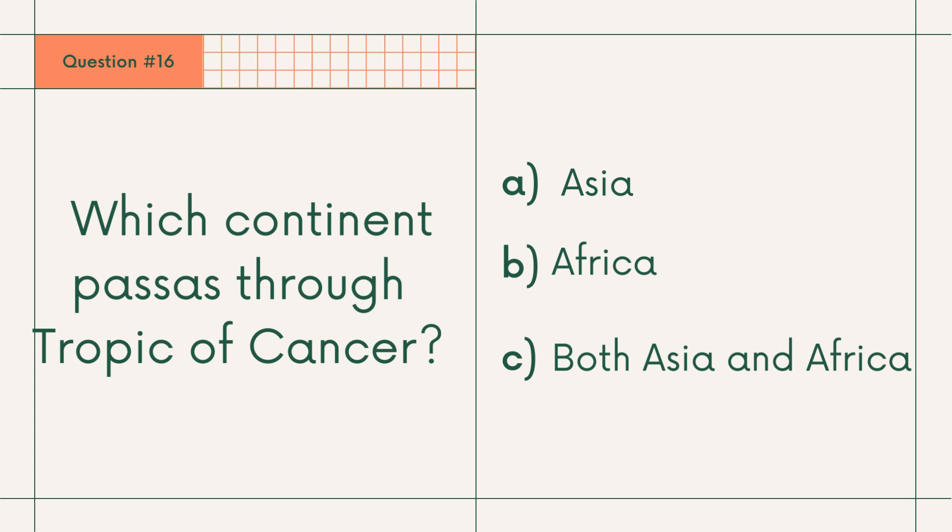Question number 16: Which continent passes through the Tropic of Cancer? A. Asia, B. Africa, or C. Both Asia and Africa. Answer: C. Both Asia and Africa.